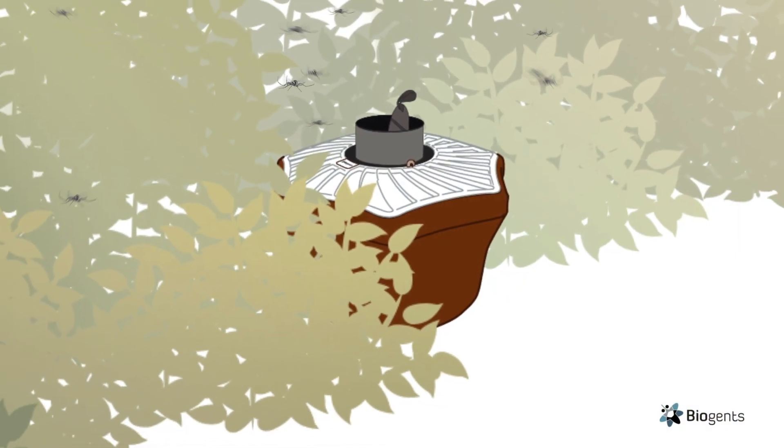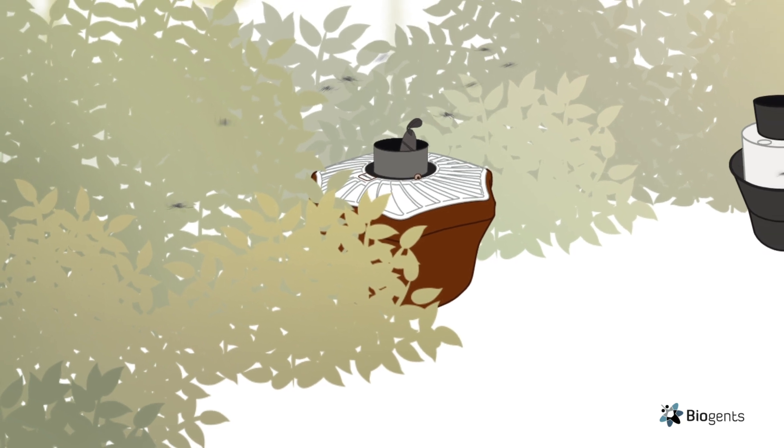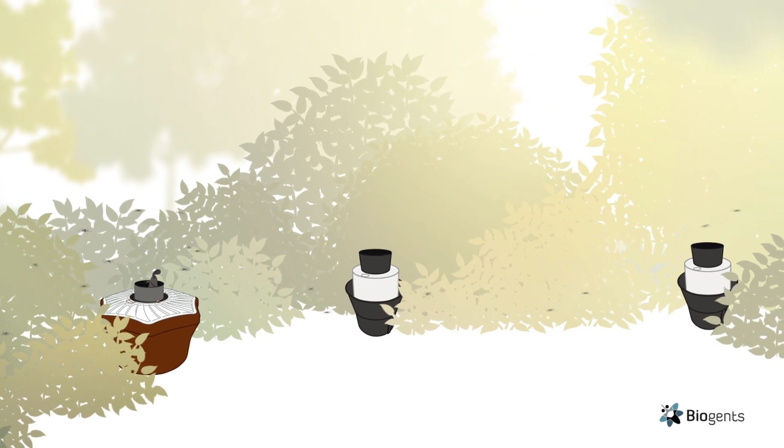If you are already using the BG Mosquito Air Trap to capture host-seeking mosquitoes, the addition of the BG Gat will add another dimension to your tiger mosquito control by reducing the reproduction.